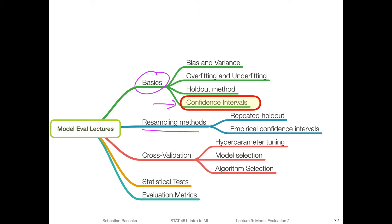In the following videos, we will talk about different resampling methods. We will first talk about the repeated holdout method, but then we will also talk about resampling methods such as bootstrapping to construct empirical confidence intervals, which are a little bit better than these normal approximation intervals. In practice, in traditional machine learning, we sometimes have smaller data sets, so the bootstrap methods are a little bit better for confidence intervals.